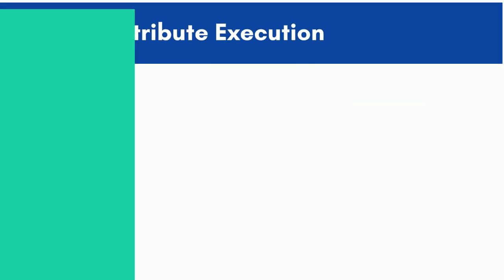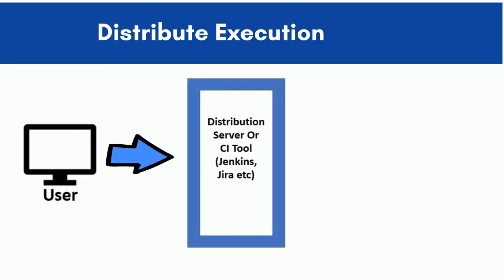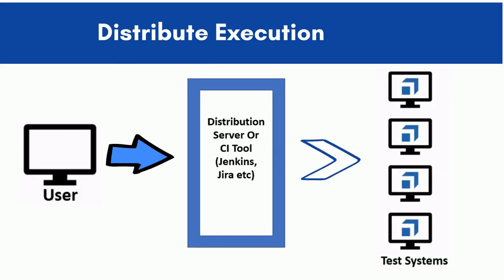Distributed execution signifies the distribution of test execution across multiple systems to reduce human efforts and execution cycle time. Based on the configuration of distributed execution, we can schedule test execution in multiple systems in an unattended mode. Also, Tosca can be easily integrated with third-party CI tools such as Jenkins, Azure DevOps, and Jira.